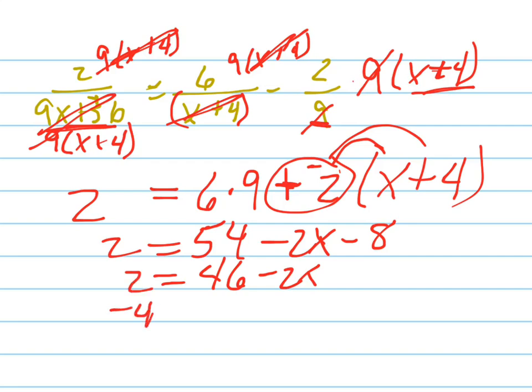Subtract 46 from both sides. It's negative 44 equals negative 2x. Divide by negative 2. x equals positive 22.